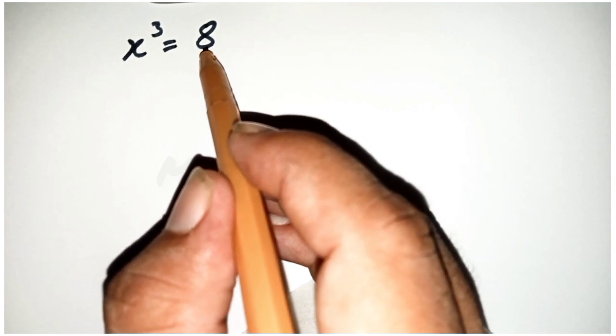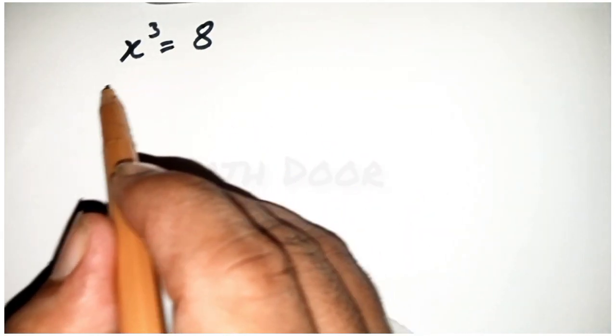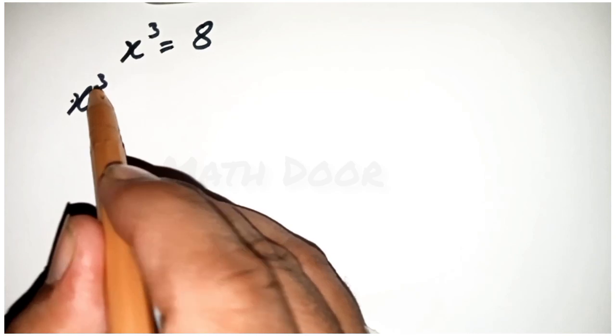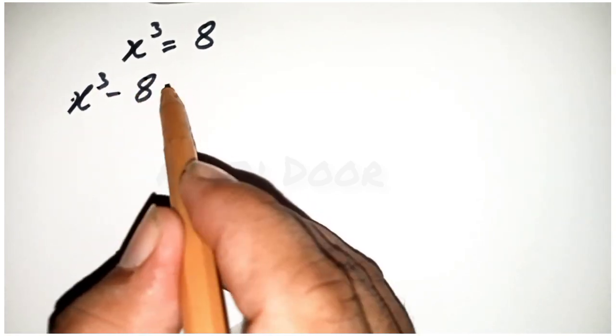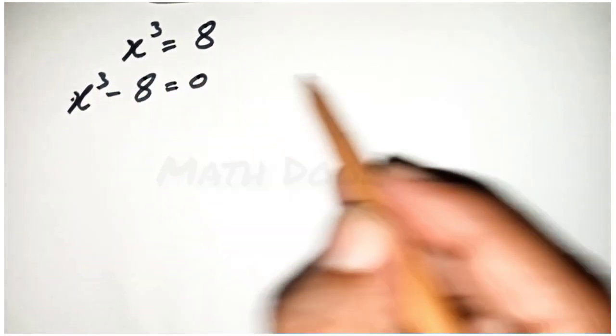First of all, we take this 8 into the left side of the equation. x power 3 minus 8 is equal to 0.